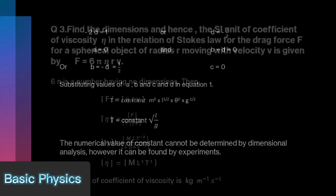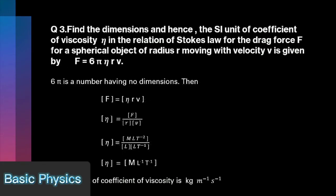Find the dimensions and hence the SI unit of coefficient of viscosity in the relation of Stokes law for the drag force for a spherical object of radius R moving with velocity V, given by F is equal to 6 pi eta R V. 6 pi is a number having no dimensions.